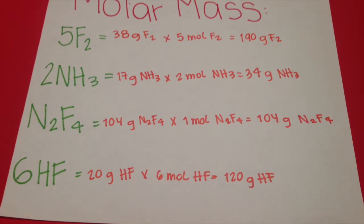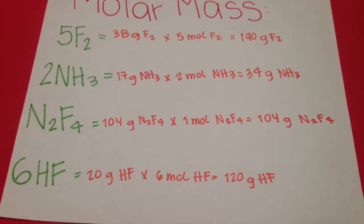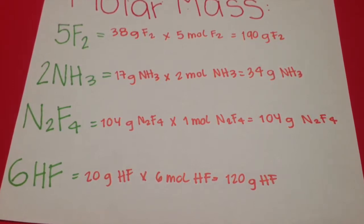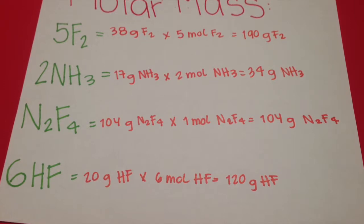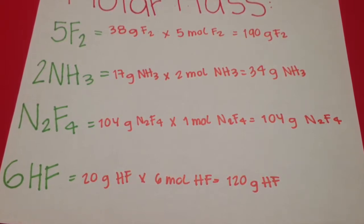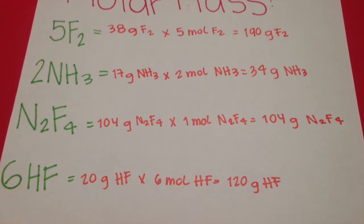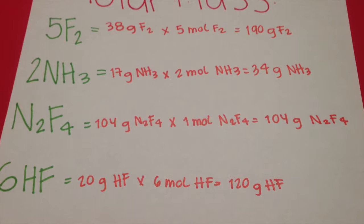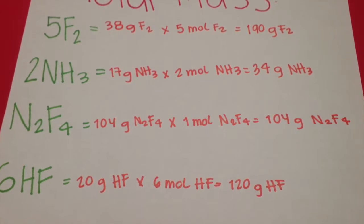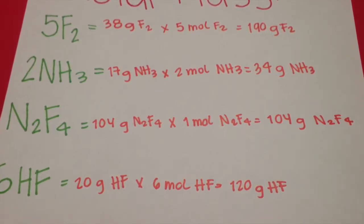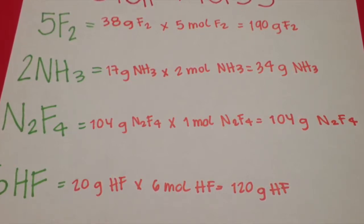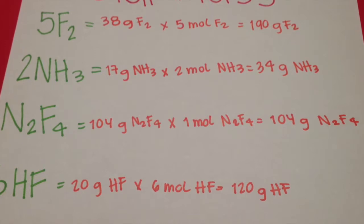The next thing I did was calculate the molar mass for each of the atoms and molecules of this reaction, by multiplying the mass of those atoms and molecules times the amount of those same atoms and molecules. The answers I got were: 5 moles of fluoride equal 190 grams of fluoride; 2 moles of ammonia equal 34 grams of ammonia; 1 mole of dinitrogen tetrafluoride equals 104 grams; and 6 moles of hydrogen fluoride equal 120 grams of hydrogen fluoride.